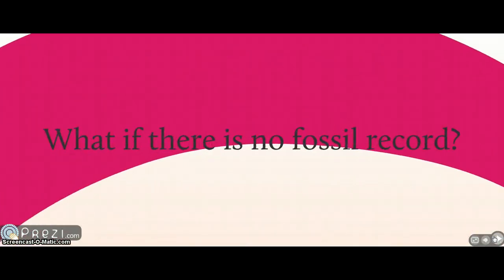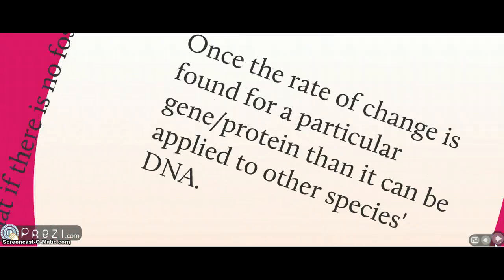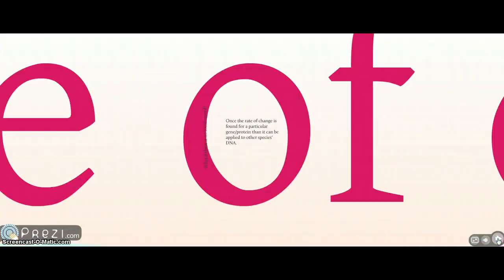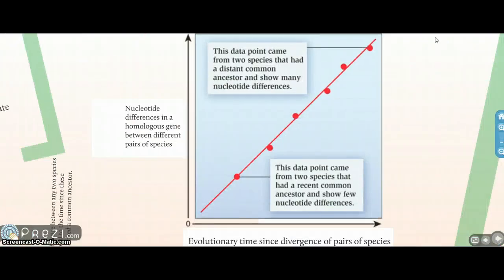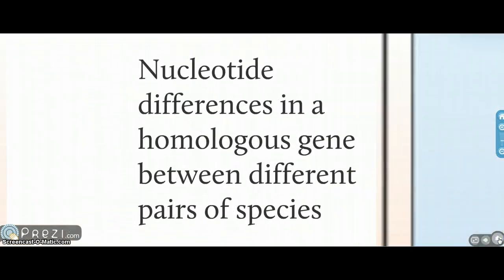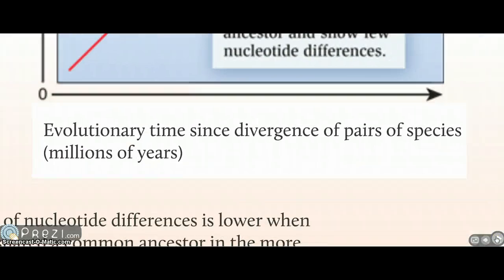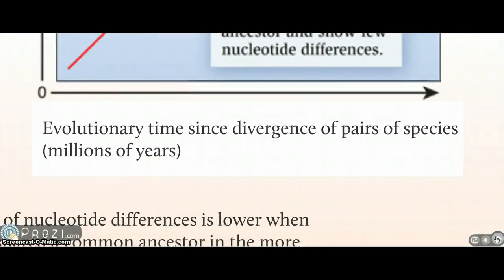But what if there isn't a fossil record for the species that diverged — what if there is no fossil? Once the rate of change is found for a particular gene, it can be applied to other species. This is kind of what a molecular clock looks like when graphed out. The y-axis shows nucleotide differences in a homologous gene between different pairs of species, and the x-axis shows evolutionary time since divergence of those species pairs.